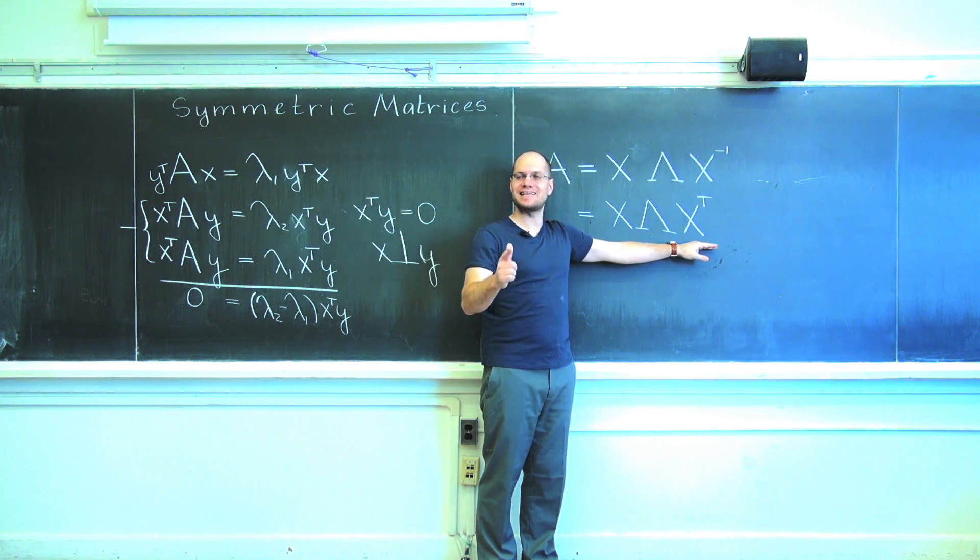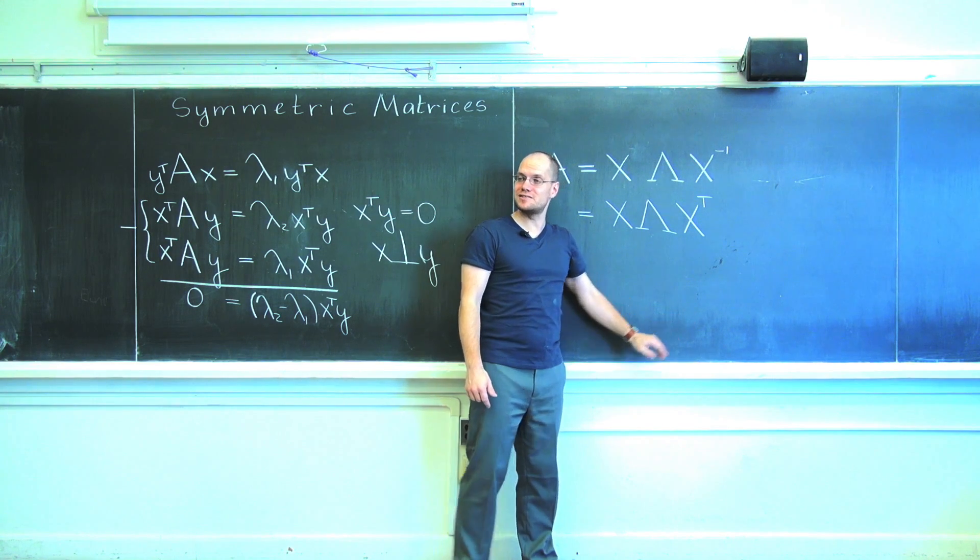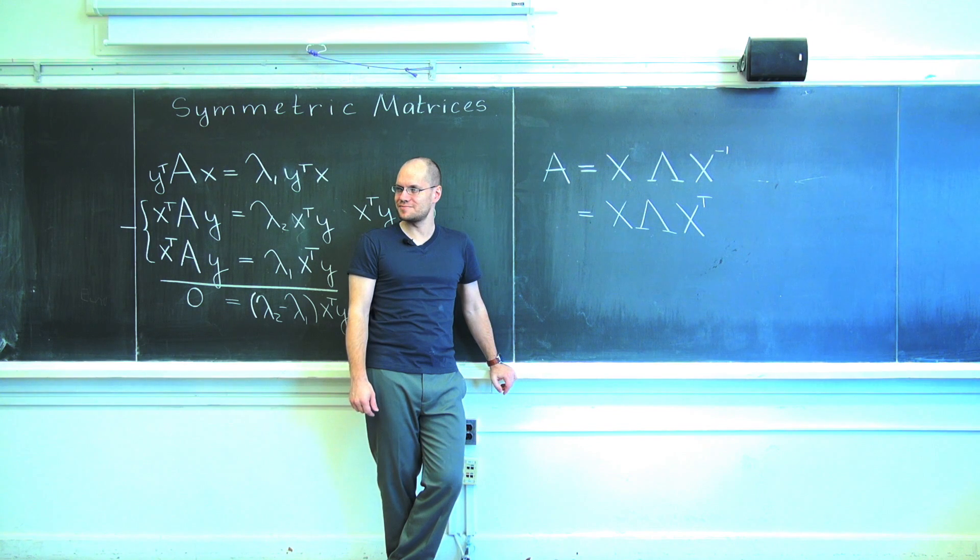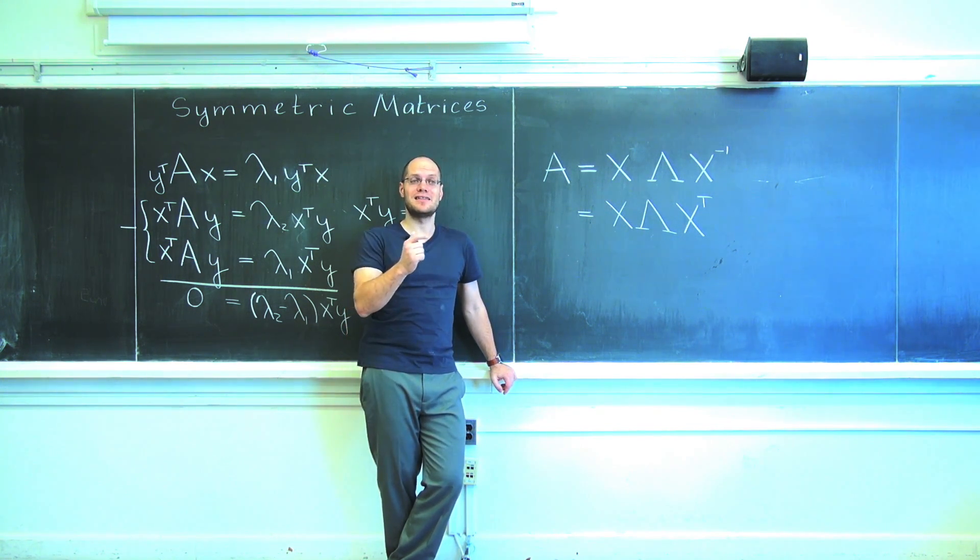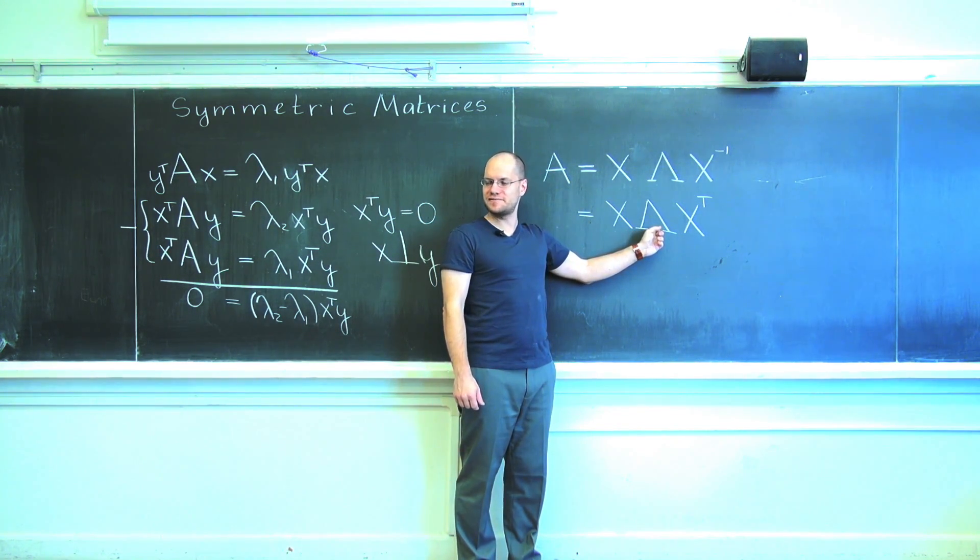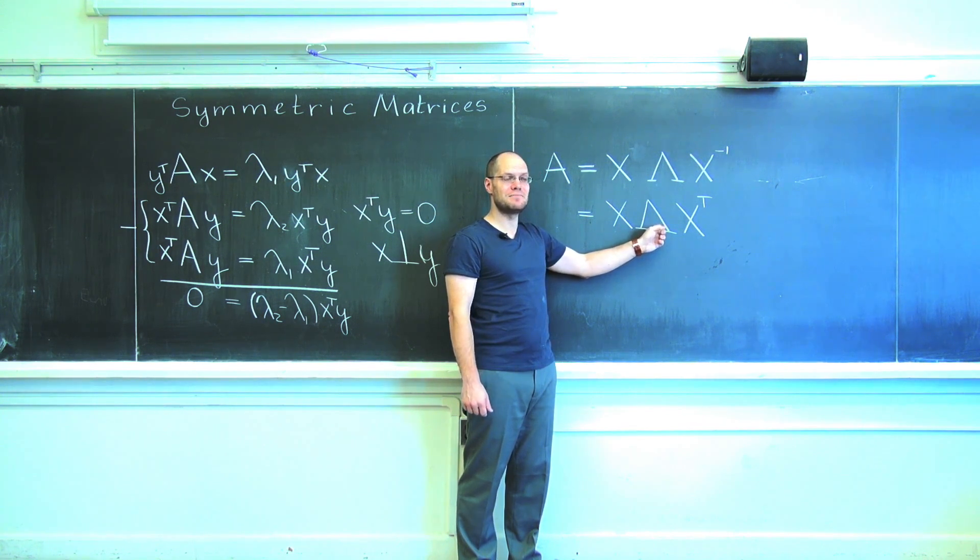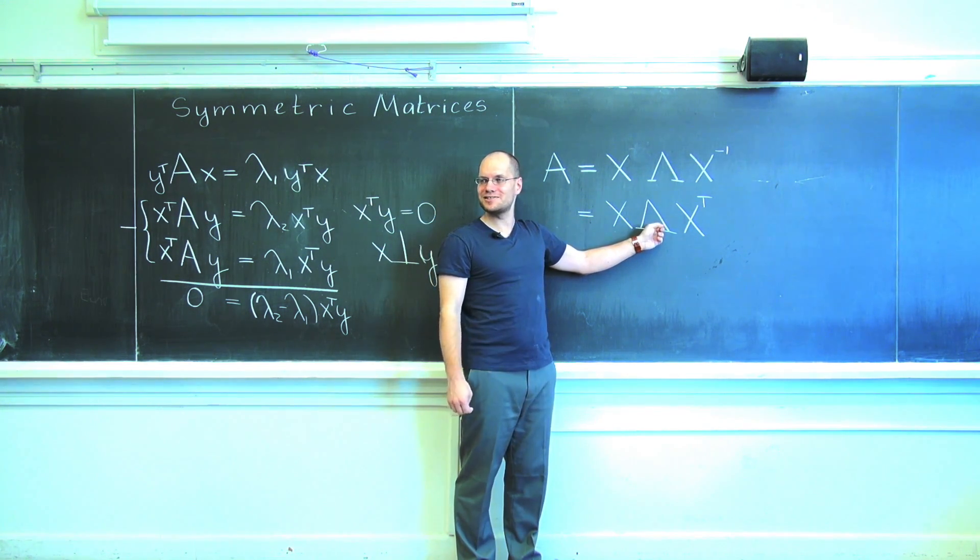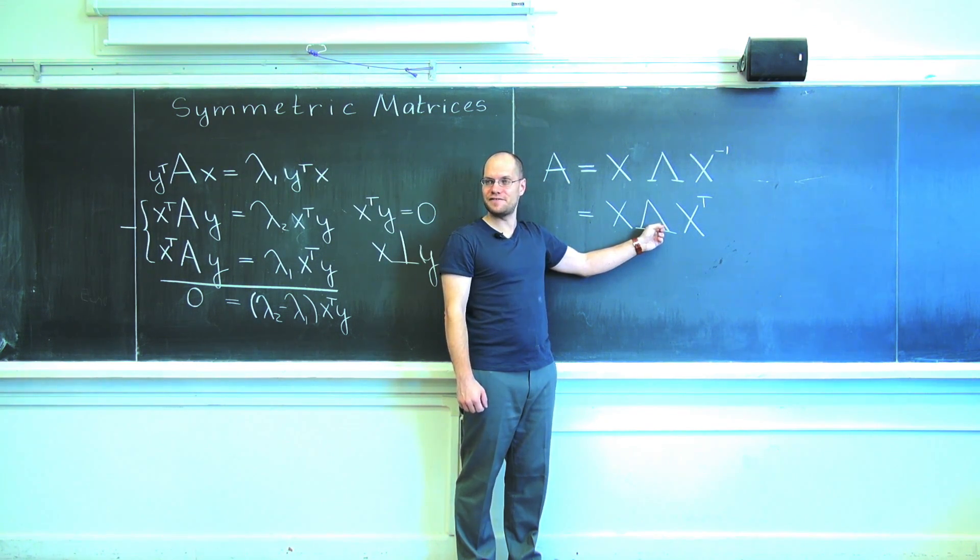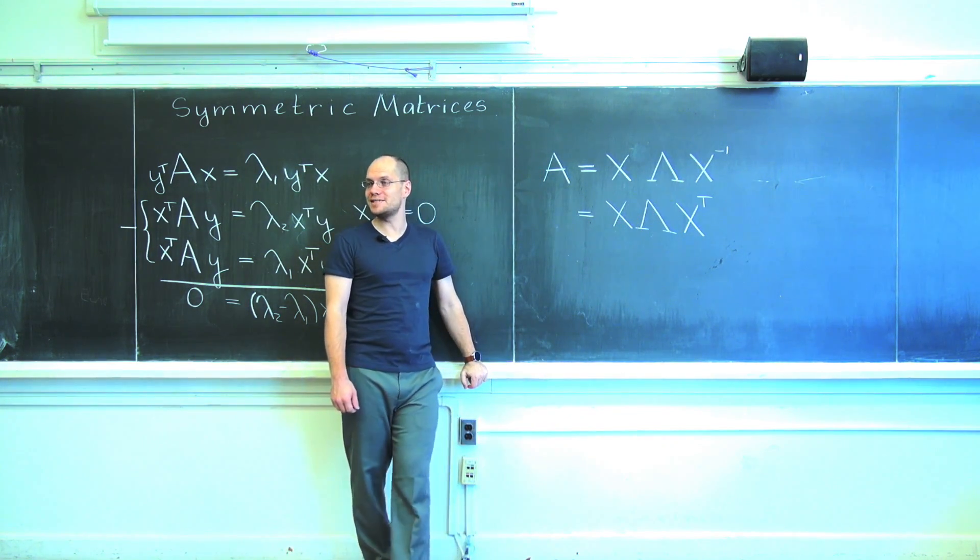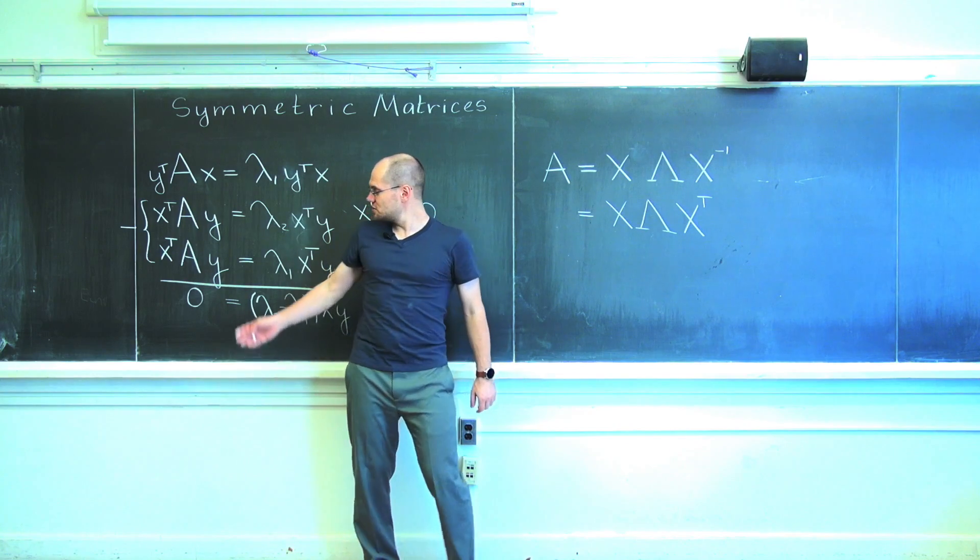And this is exactly the form that we have just been considering in the case of LDL transpose decomposition. And we know what makes that matrix positive. All we need is for the matrix in the middle to be positive definite. But this is a diagonal matrix with the eigenvalues on the diagonal. So that just means that for a symmetric matrix, this question can only be considered for a symmetric matrix, to be positive definite it is necessary and sufficient for its eigenvalues to be positive.